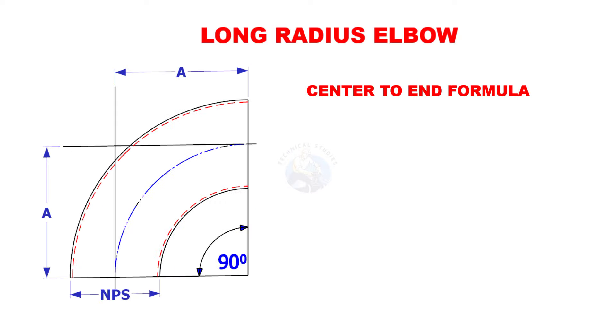Center to end formula. Assume that A is the center to end distance and NPS is the nominal pipe size.